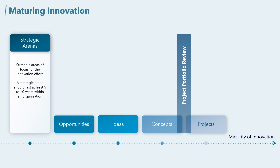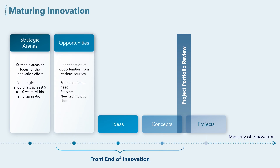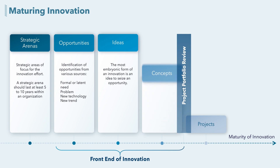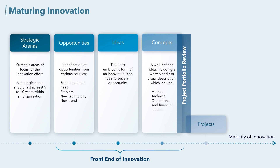The front-end of innovation phase can be separated into three steps, each aimed at helping the maturation process. The lowest level of maturity is the opportunity, and there should be multiple opportunities within each arena. Opportunities can be identified from a latent need, a problem that needs solving, a new technology, a new trend, and so on. Ideas are then generated to seize the opportunity — this is the most embryonic form of innovation. A simple idea on a post-it note is what starts it all. That idea can be refined and combined with others into a concept — a well-defined one-pager as opposed to a one-liner.